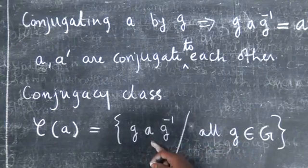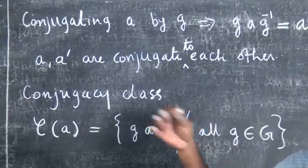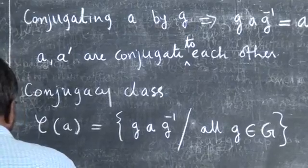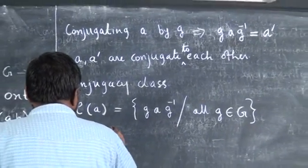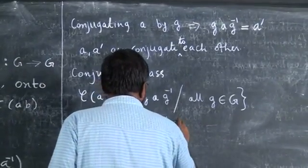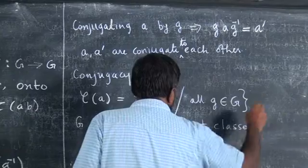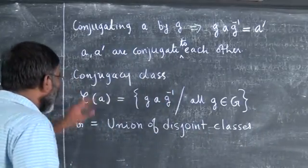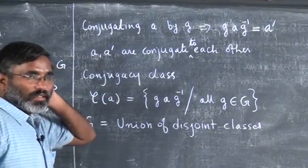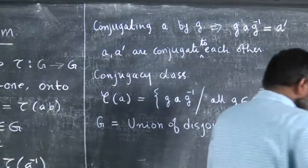In one class you may not get all elements of the group. Then you take an element not found in this class and you will get another class. So you can write G as a union of disjoint conjugacy classes, just as yesterday we wrote G as a union of disjoint cosets.